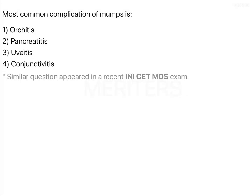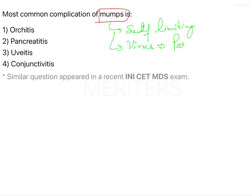The most common complication of mumps is orchitis, pancreatitis, uveitis, and conjunctivitis. Mumps is a self-limiting disease caused by the paramyxovirus. This particular disease is also known as epidemic parotitis.